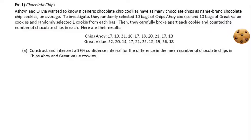So the chocolate chips example says Ashton and Olivia wanted to know if generic chocolate chip cookies have as many chocolate chips as name brand chocolate chip cookies on average. To investigate, they randomly selected 10 bags of Chips Ahoy cookies and 10 bags of Great Value cookies and randomly selected one cookie from each bag. So that seems pretty random. Randomly pick 10 bags and then randomly pick one cookie from each bag. Then they carefully broke apart each cookie and counted the number of chocolate chips in each. Here are their results. There's the Chips Ahoy data and the Great Value data. Our job is to construct and interpret a 99% confidence interval for the difference in the mean number of chocolate chip cookies in Chips Ahoy and Great Value cookies.